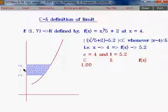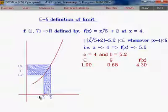Now this epsilon neighborhood of L is transformed on the curve and the curve finally projects it on the x-axis, giving the corresponding delta neighborhood of C, and the value of delta is 0.68.